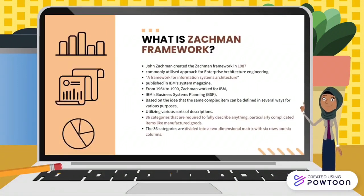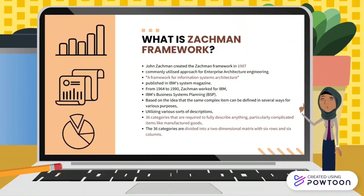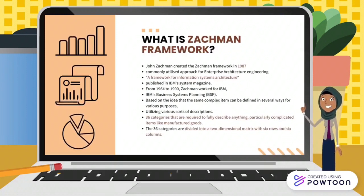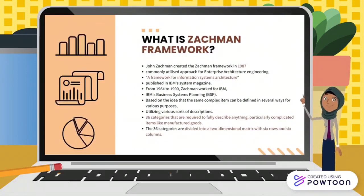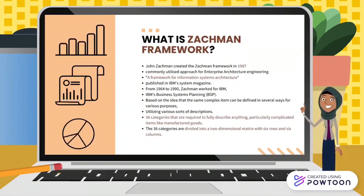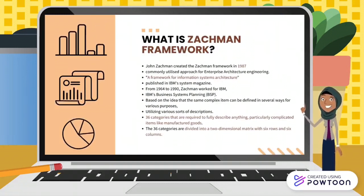First of all, what is the Zachman Framework? The Zachman Framework was created in 1987 by John Zachman, and it is a commonly utilized approach for enterprise architecture engineering. This framework was known as a framework for information system architecture, and it was published in IBM magazine, as Zachman worked for IBM from 1964 until 1990. This framework was created based on the idea that the same complex item can be defined in several ways for various purposes, and it can utilize various sorts of descriptions.